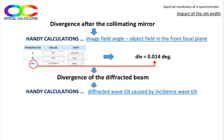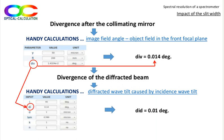Then, the divergence of the beam after diffraction can be calculated in the page diffracted wave tilt caused by incident wave tilt. With the considered input, including the incident beam divergence, that is entered in the incident wave tilt cell, which is parameter Di, the calculated divergence of the diffracted beam is rounded to 0.01 degrees.